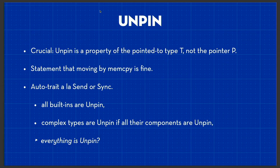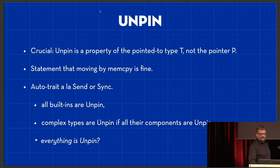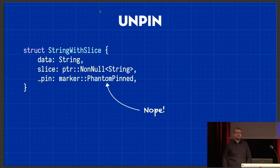Unpin is, in fact, an auto-trait, which means the compiler implements it automatically for all types it thinks are Unpin. That's the same way that Sync and Send work. And basically everything is Unpin — all the built-in types like usize, obviously you can just move a usize around. Complex types like structs and enums are Unpin if everything inside them is Unpin — same as for Send. So, really, everything is Unpin? Then why are we doing this? Well, there's a thing called PhantomPinned, which is one of these marker types like PhantomData, which is not Unpin. So if you want to build a self-referential struct, you just make PhantomPinned part of your struct, and then magically it's not Unpin anymore, which means it cannot be moved around.